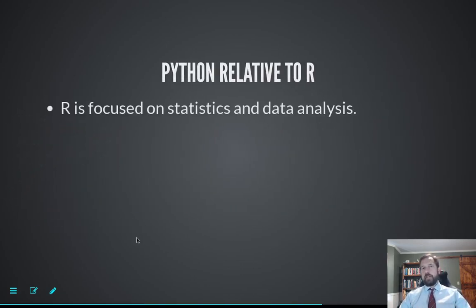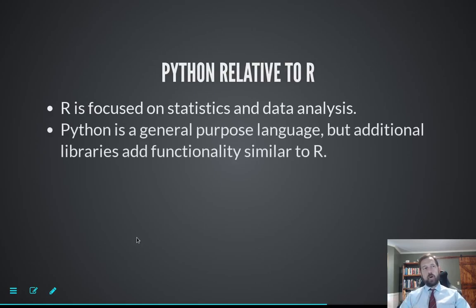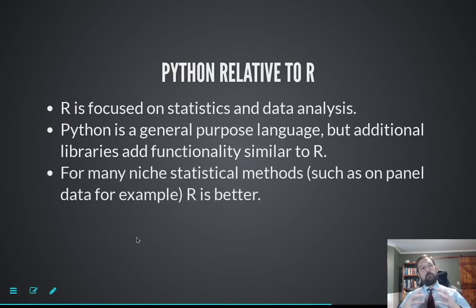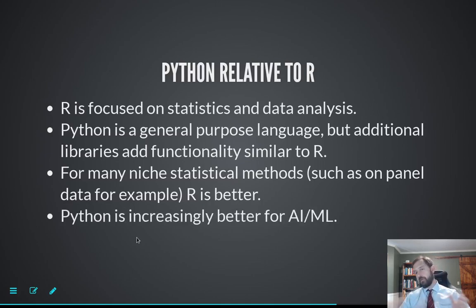Python relative to R: they're very similar. Much of what we'll do in Python you can also do in R. Python is more general purpose whereas R is more focused on statistical calculations. There are no distinctions that will really matter for this course. R might be slightly better for panel data, Python is better for machine learning and AI, but it's not an important distinction here — you could use R just as you're using Python.